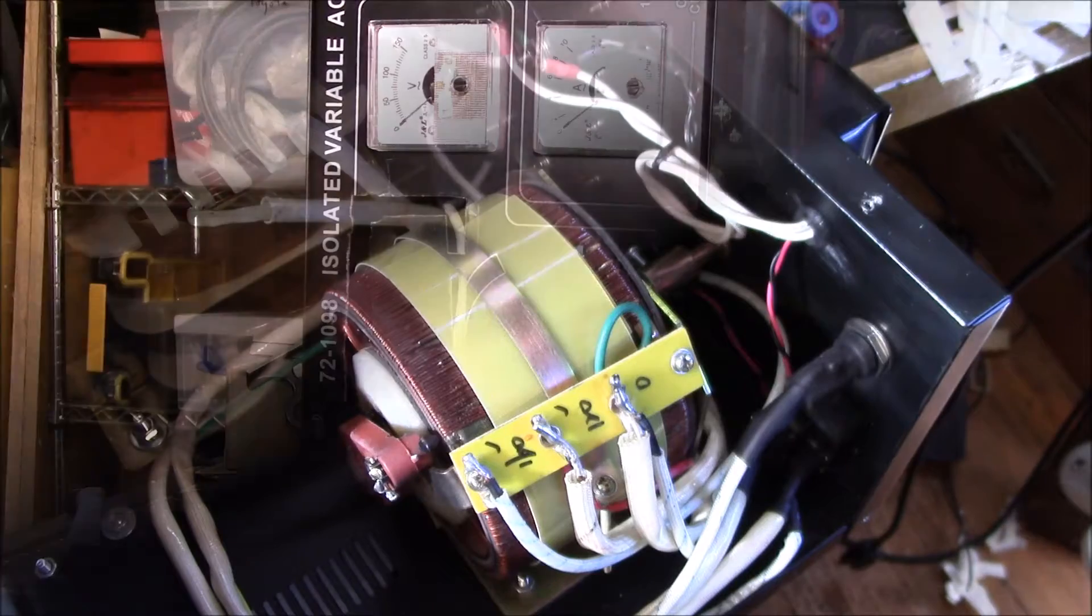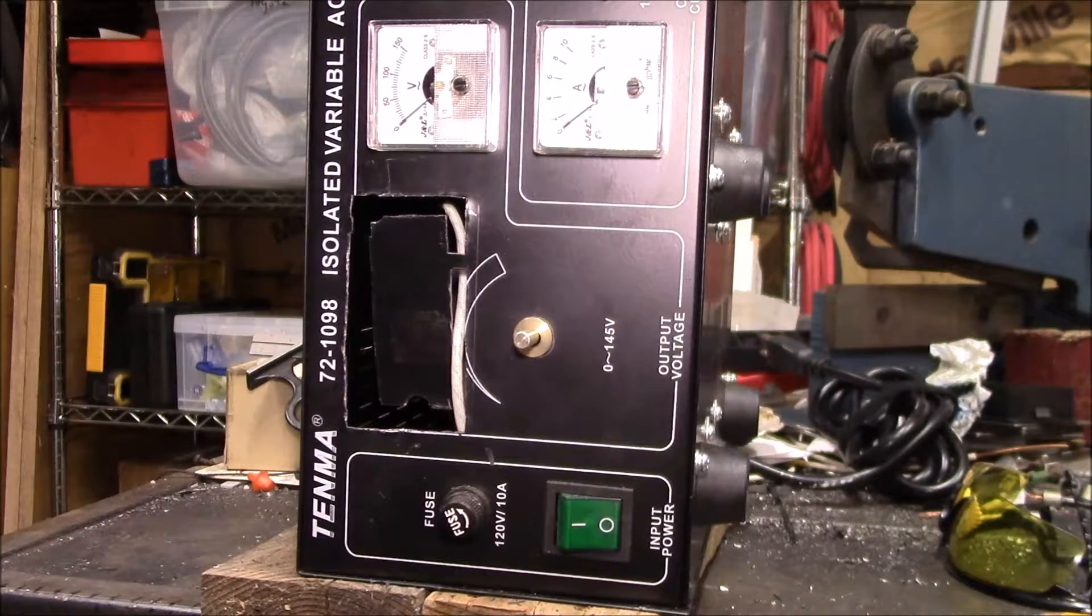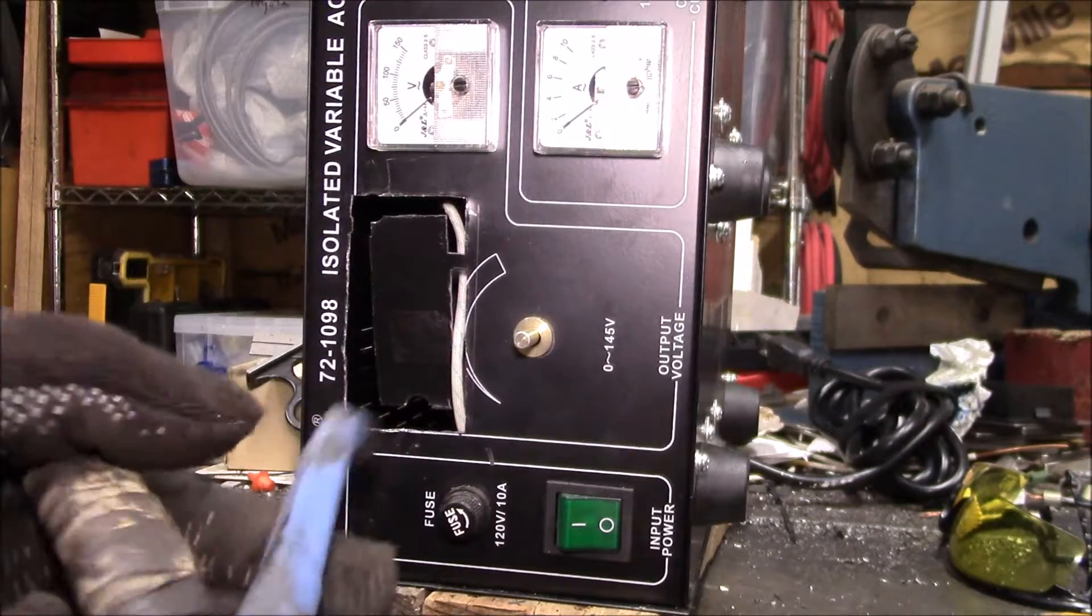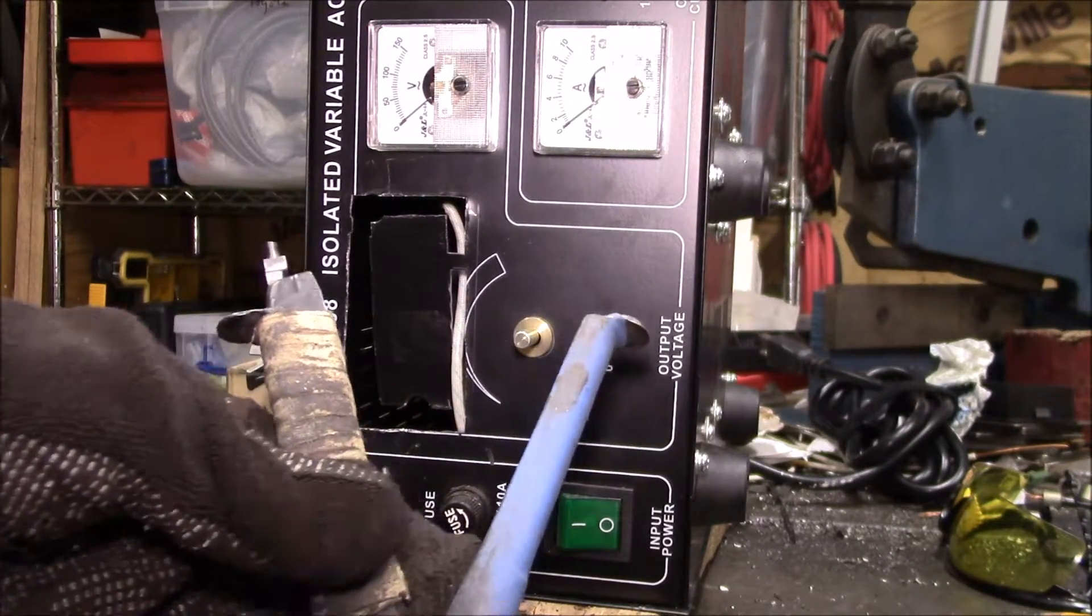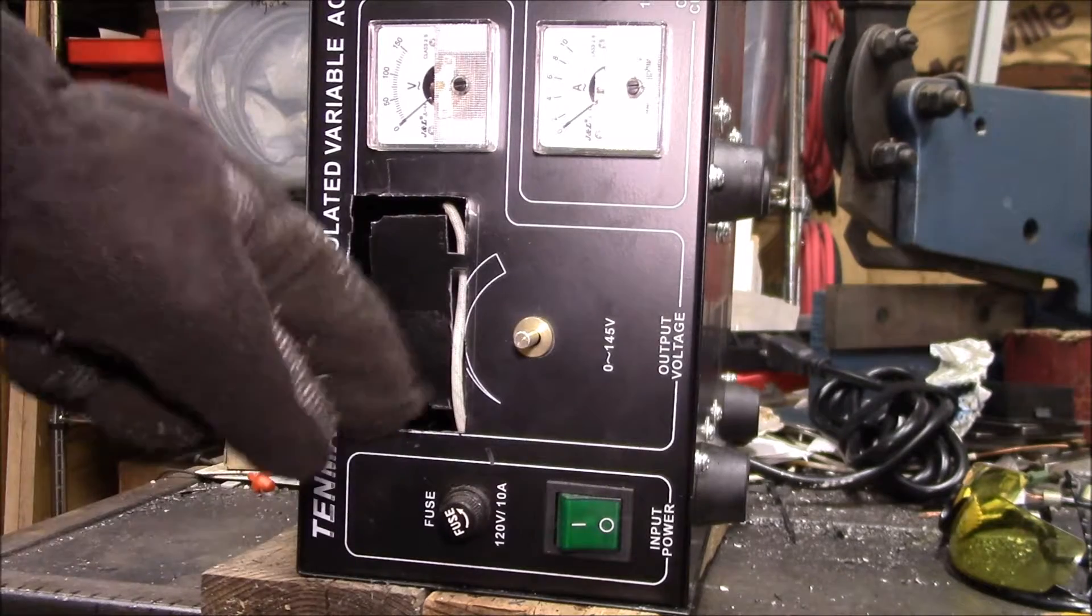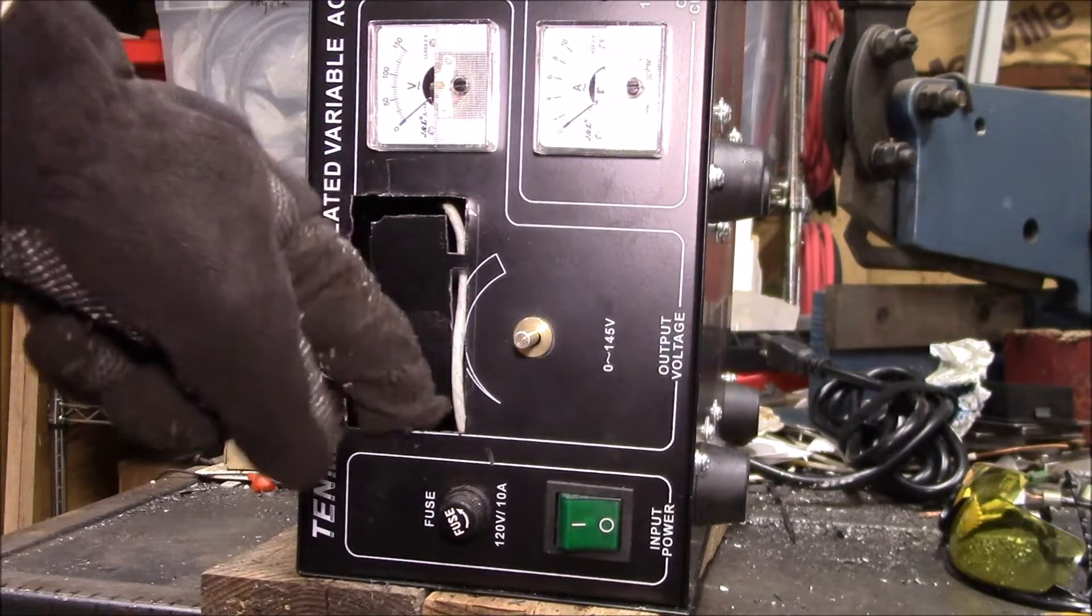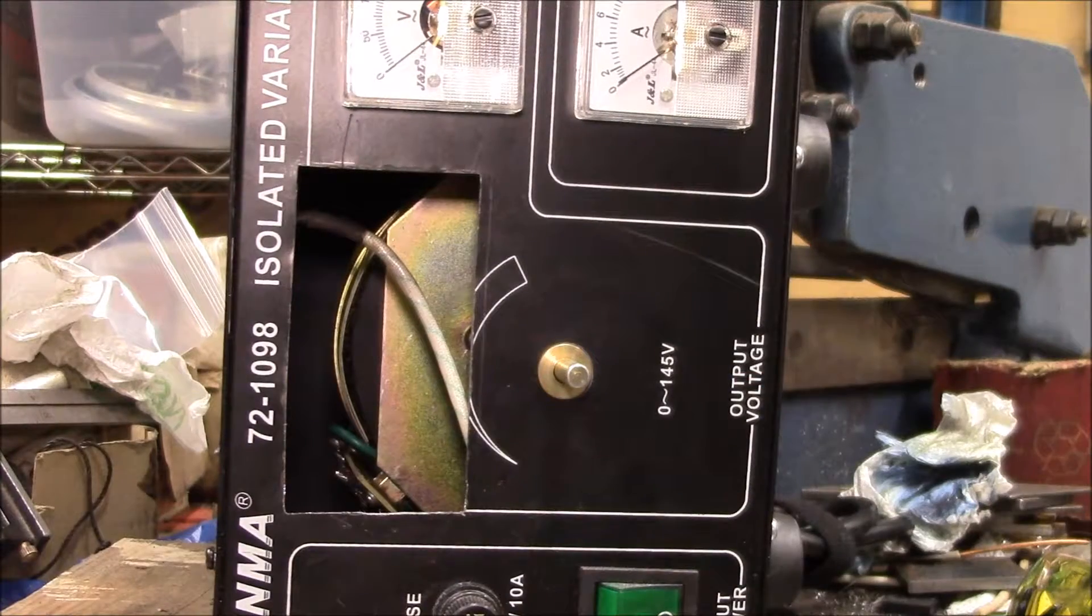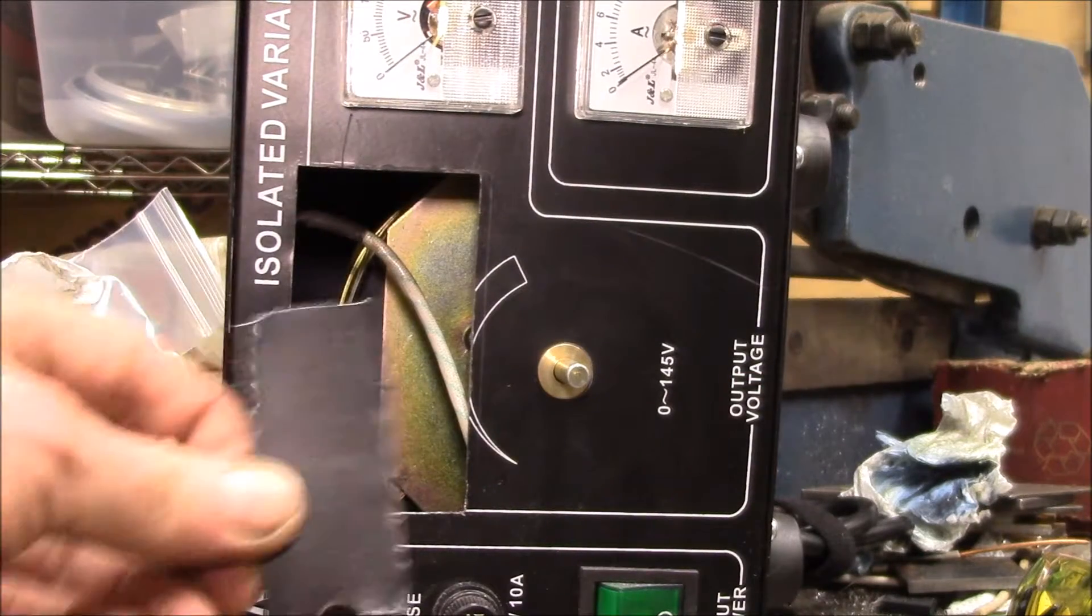Okay, just about got the cutout here for the panel meter. I'm just using my old sheet metal nibbler here, and if I keep it up on end, any of the steel chips should fall down to the bottom there.